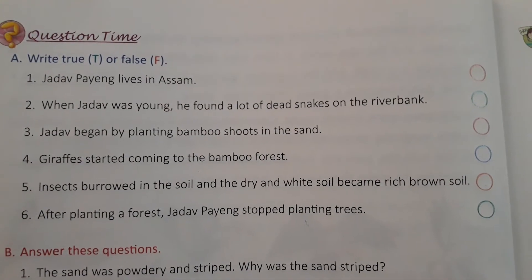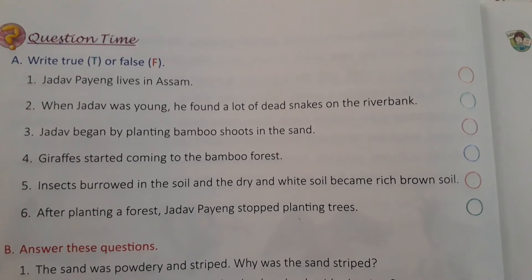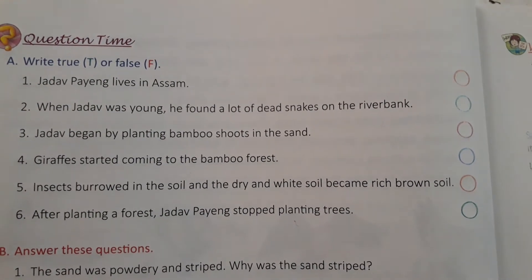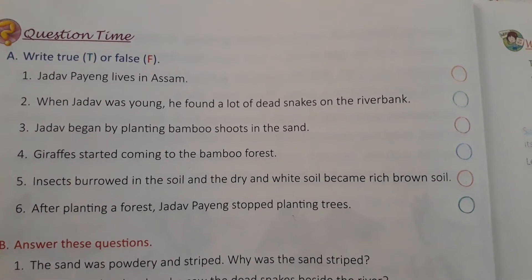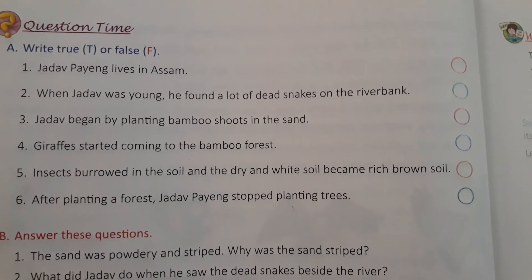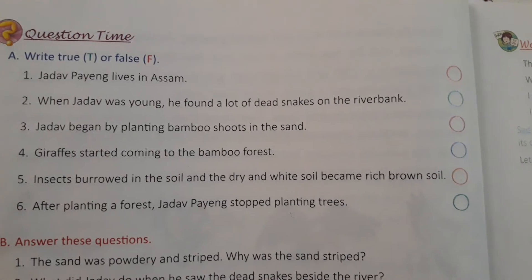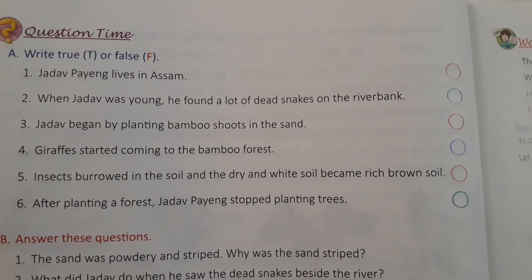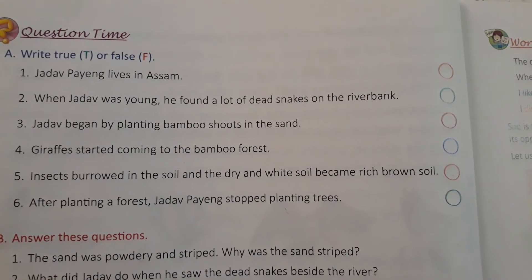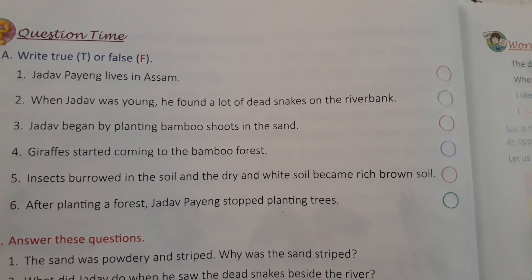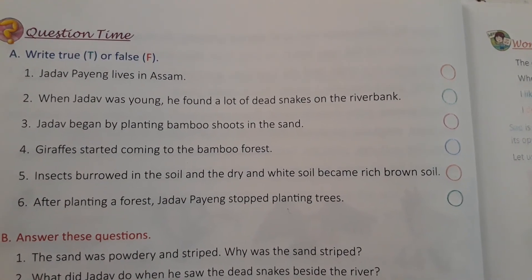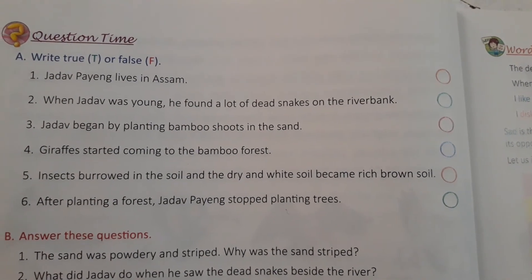मैं फिर से पढ़ रही हूं, ध्यान से सुनिये बच्चो. 1st: Jadav Payeng lives in Assam — True. 2nd: When Jadav was young, he found a lot of dead snakes on the river bank — True. 3rd: Jadav began by planting bamboo shoots in the sand — True. 4th: Giraffes started coming to the bamboo forest — False. 5th: Insects burrowed in the soil and the dry and white soil became rich brown soil — True. 6th: After planting a forest, Jadav Payeng stopped planting trees — False.